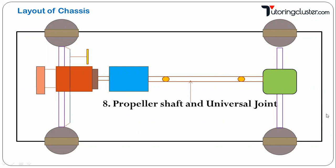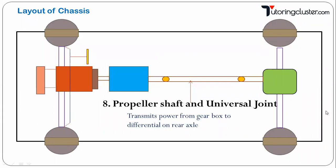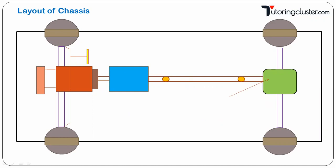The next part is the propeller shaft and universal joint. The propeller shaft is a mechanical element that transmits power from the gearbox to the differential gearbox. One end of the propeller shaft is connected to the gearbox through a universal joint, and the other end is connected to the differential gearbox again using a universal joint.